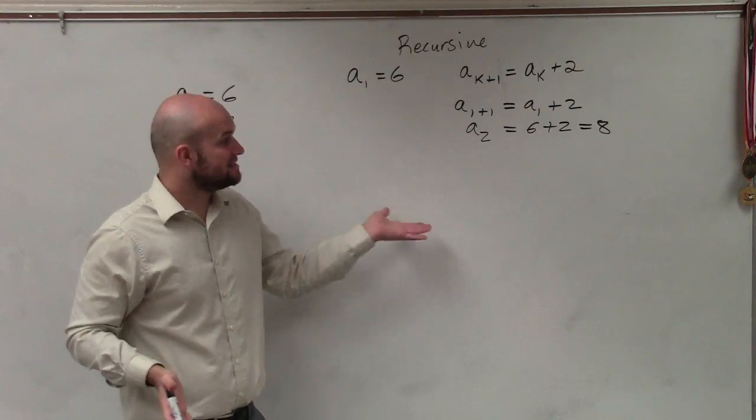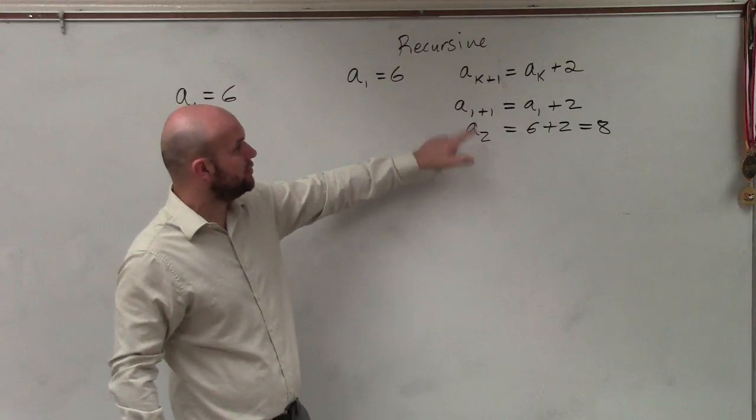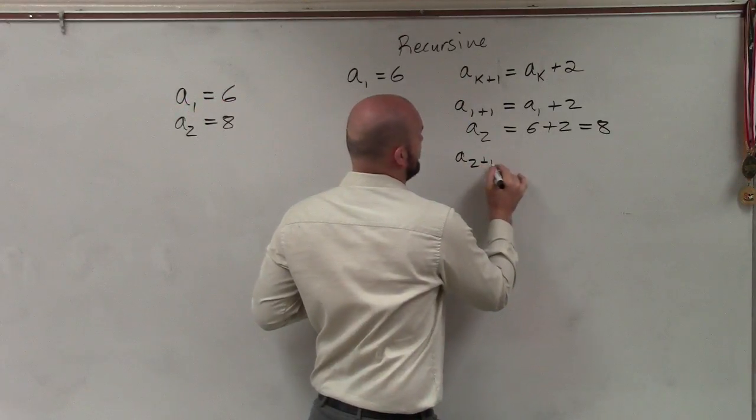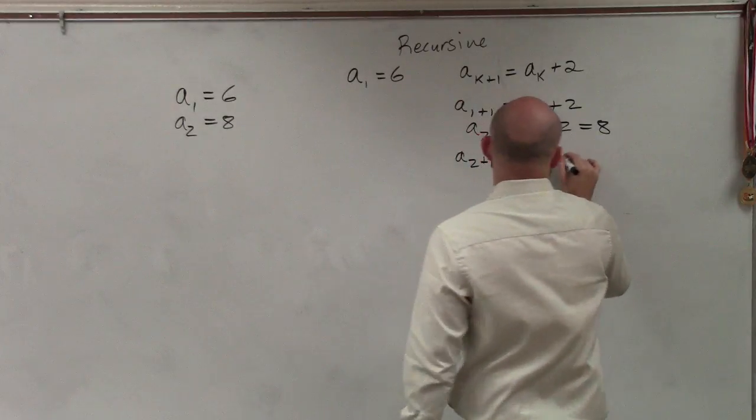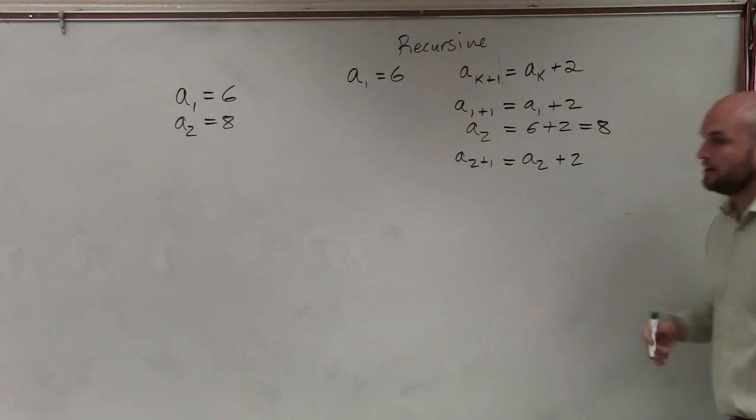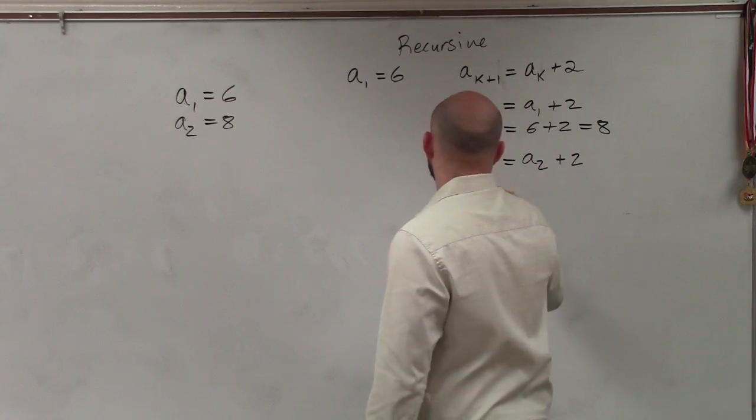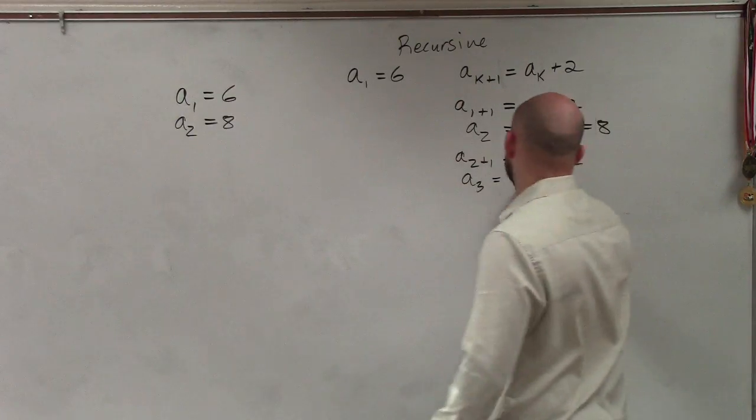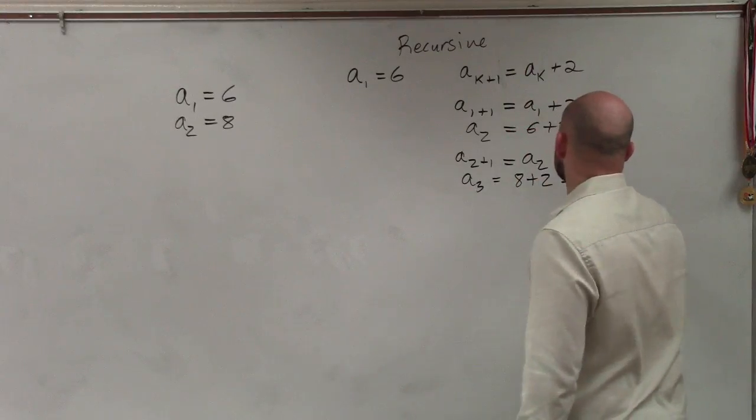Now I go to the next term. So now I plug in a two in for the k. So a sub two plus one equals a sub two plus two. A sub two plus one is a sub three. Equals a sub two is eight plus two, which equals ten.